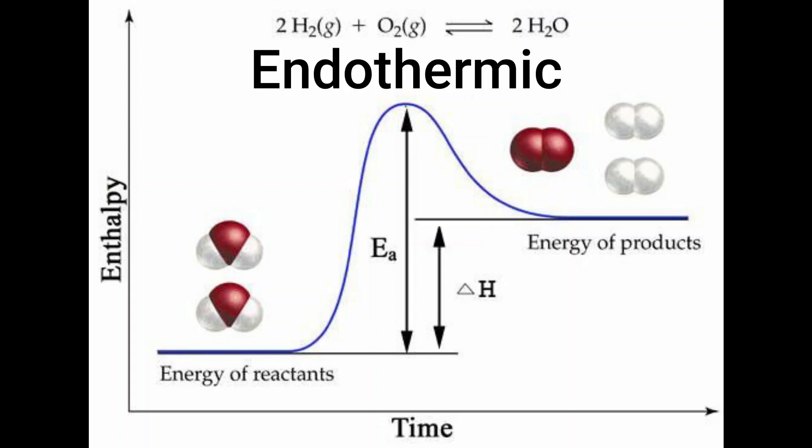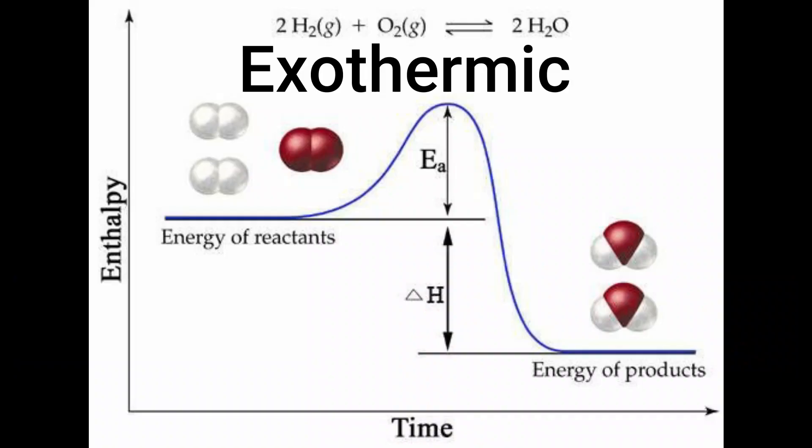Energetically unfavorable reactions are also known as endothermic reactions, and energetically favorable ones as exothermic. In endothermic reactions, heat — which is a form of energy — is flowing in at a faster rate than it's flowing out. But in exothermic reactions, more heat energy is being released than gained, which increases the entropy of the universe.